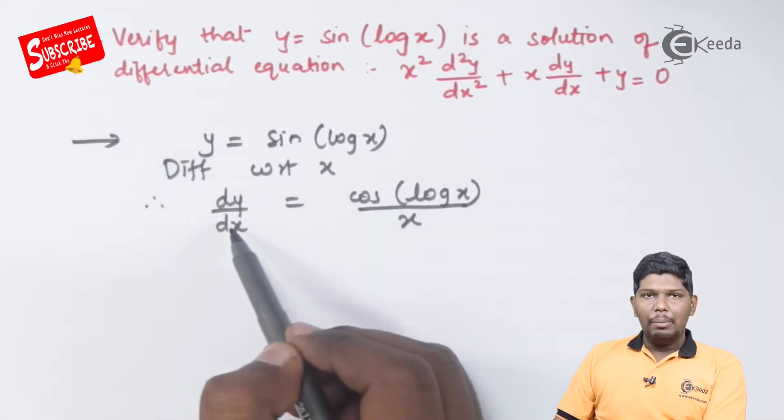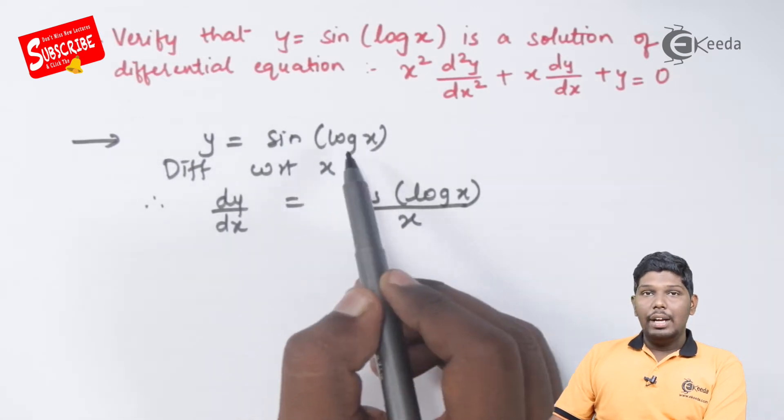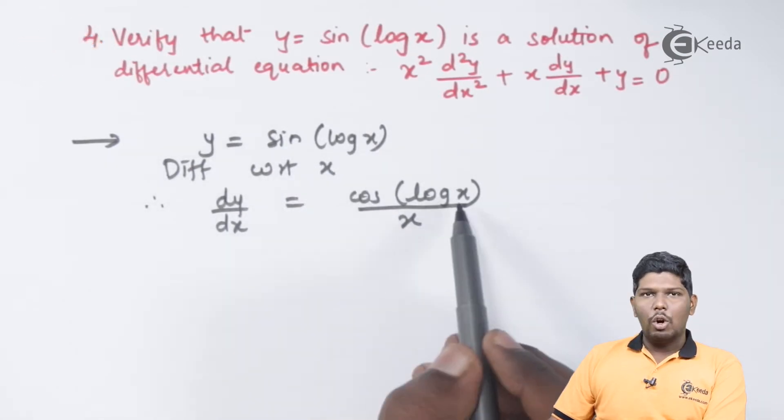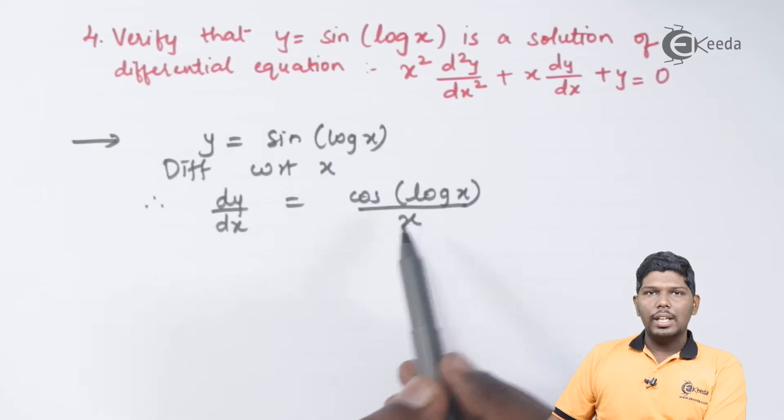After differentiating, we have dy by dx is equal to derivative of sin log x, it is cos of log x into derivative of log x is 1 by x.